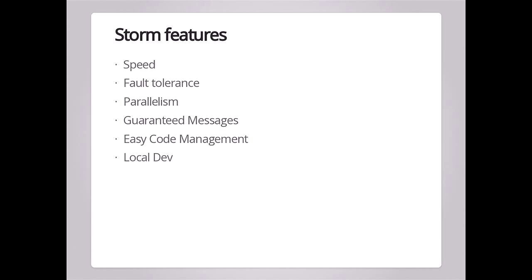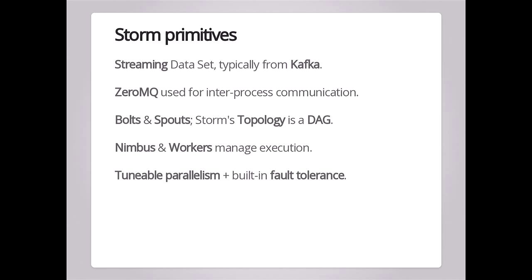Storm's features are that it's fast — it can handle millions of tuples per second per node. It's got fault tolerance built in, so it knows when nodes go down or when data isn't processed, and it can rescale the cluster appropriately. It has parallelism built in and it's separate from your code, so you don't change your code to make your system more parallel — you just change the topology configuration. It has guaranteed message processing built in. We use Kafka for streaming data, and almost everyone who uses Storm in production also uses Kafka for this.